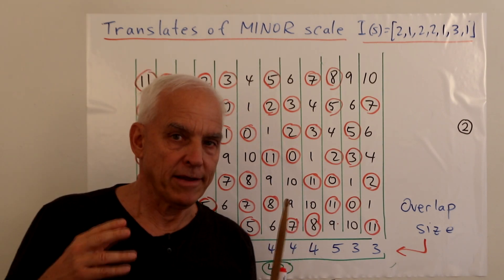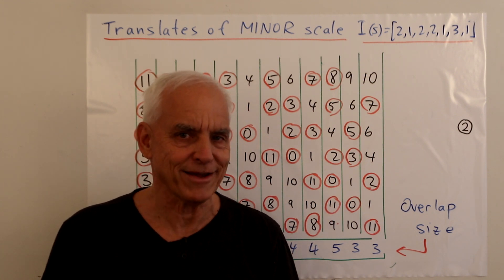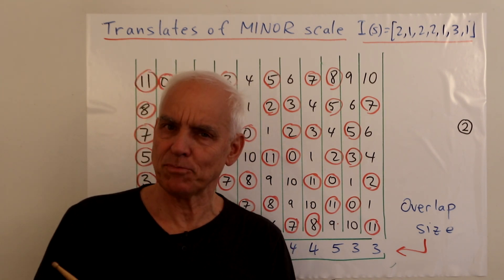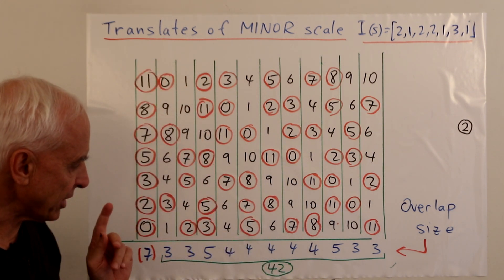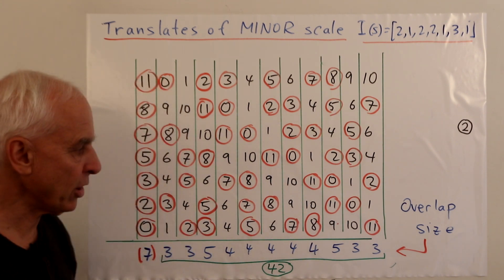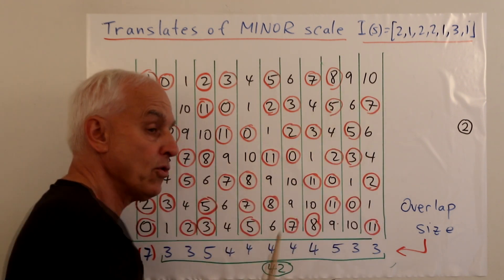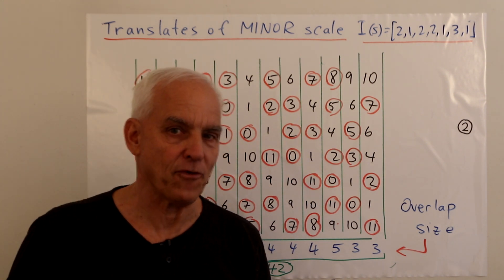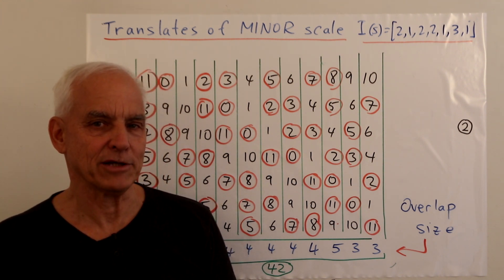And so the harmonic minor scale does not support this almost uniformity that the major scale had. So, for example, if we were thinking about creating a key signature framework based on a minor scale, it would not be so convenient. So that leads us to think, well, just how common is this particular property of the major scale? But before we go on with another example, I just want to observe one more thing. That if we total the total number of overlaps between the original and all these new ones, the total here is 42. And you can check that it was also 42 for the major scale.